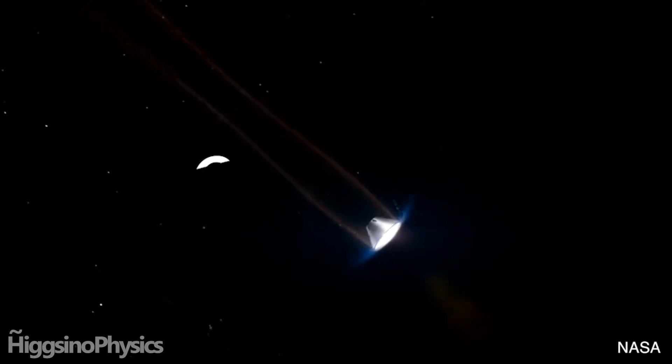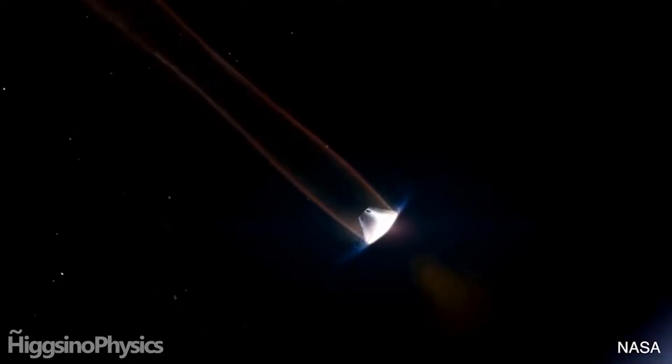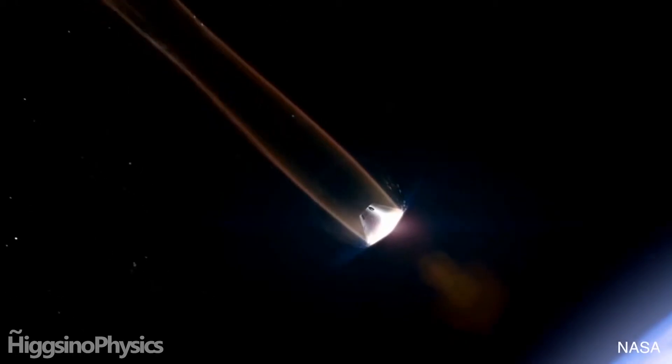When spaceships are re-entering Earth, they heat up quite a bit when they fly through the atmosphere and they need some kind of protection, as you can see in this animation by NASA.